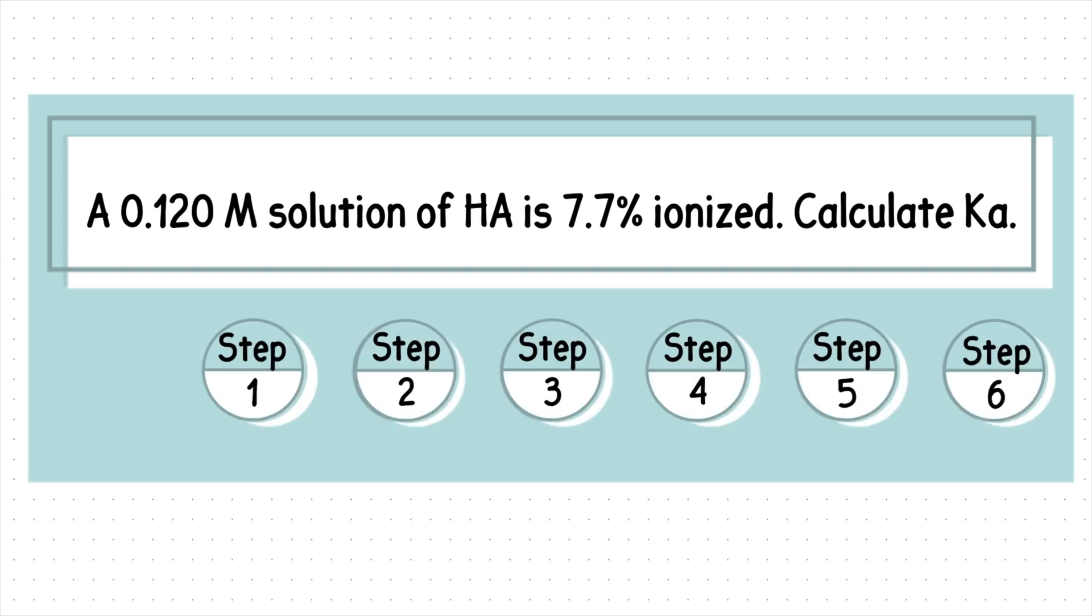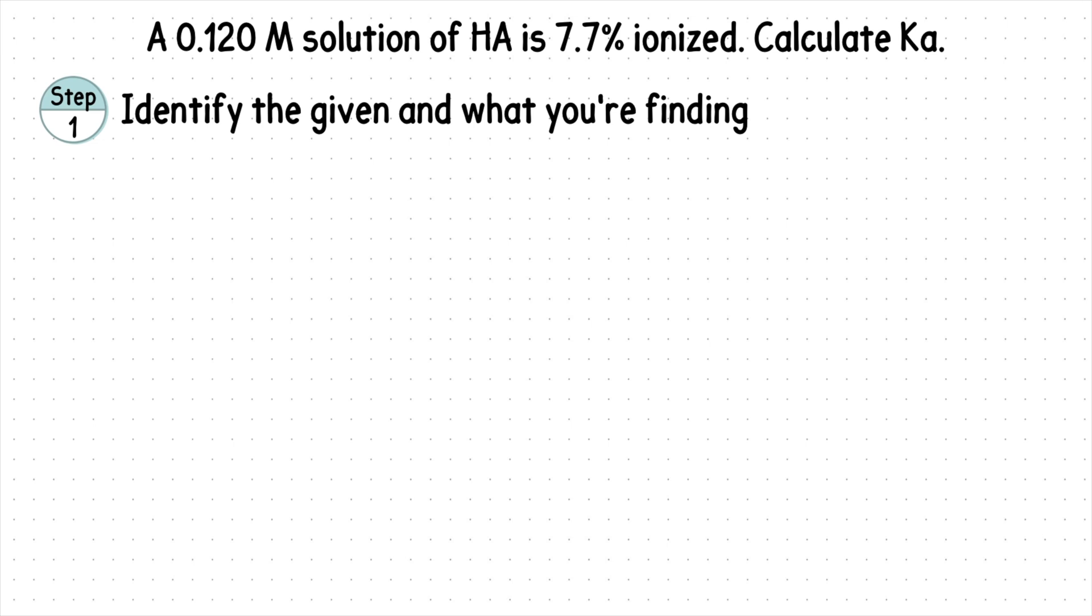Let's go over the six steps for this problem. Step one, identify what we're given and what we're finding. We're given the concentration of a weak acid and the percent ionization. We're finding KA.